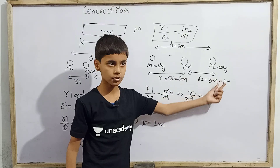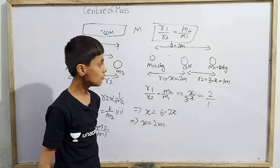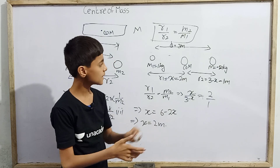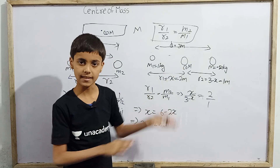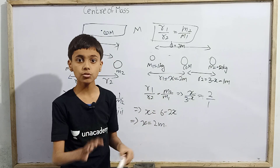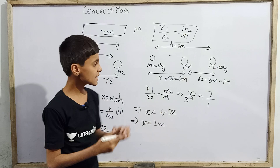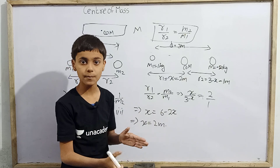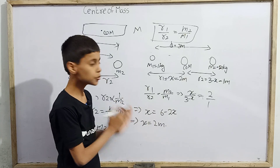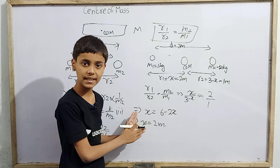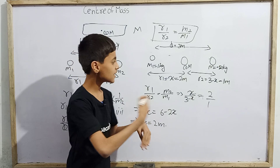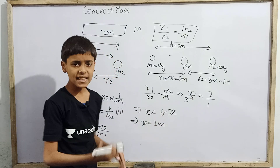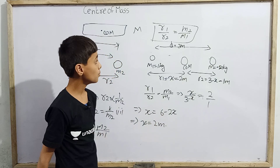So x equals 2 meters means r1 equals 2 meters. Then r2 equals 3 minus x, which is 3 minus 2, equals 1 meter. The center of mass is located at a separation of 2 meters from m1 and 1 meter from m2.